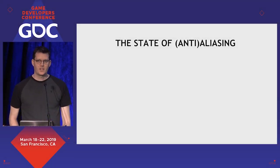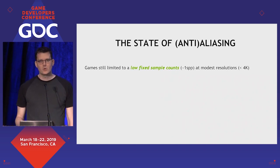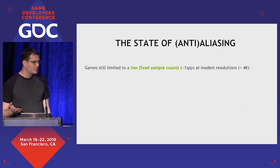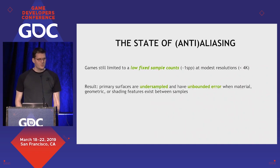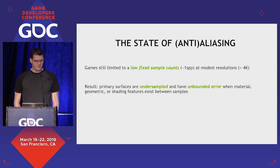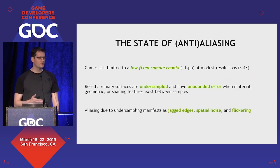Let's start with the state of anti-aliasing. We need to understand where we are to figure out where we're going. Games are still typically limited to a low fixed sample count — typically one sample per pixel — and we're operating at modest resolution, less than 4K or even at 4K. The result is that primary surfaces are typically undersampled, causing unbounded error when materials, geometry, or shading features fall within this fixed grid of samples. And we've all seen this — for many of us this has been the bane of our existence for many titles.